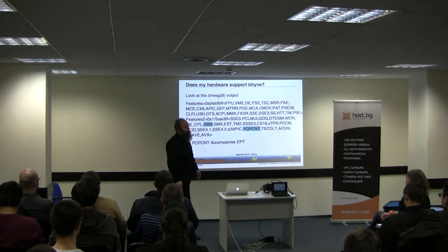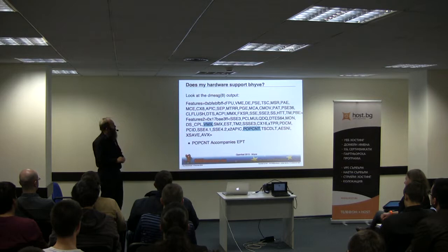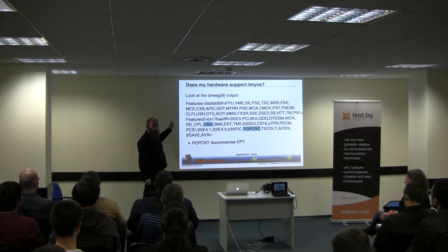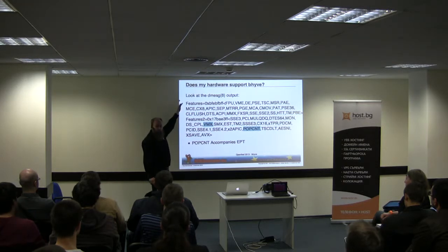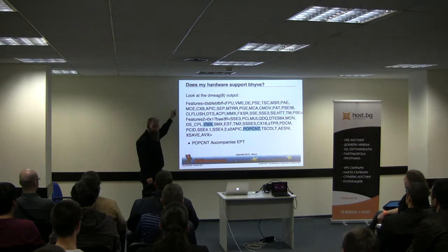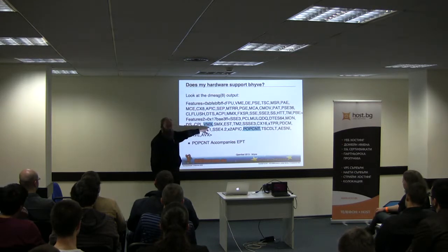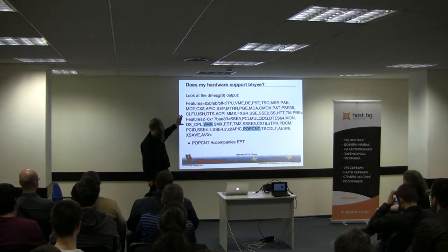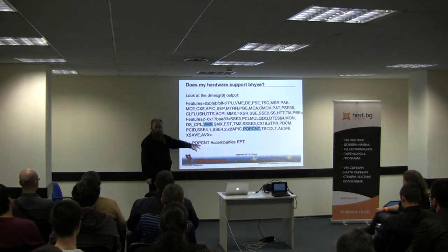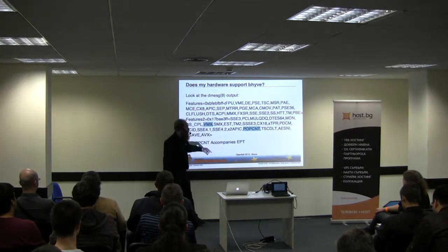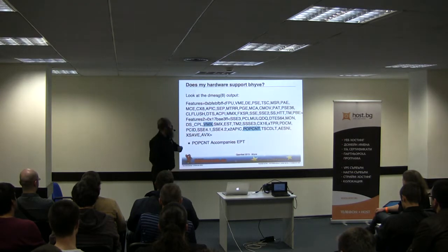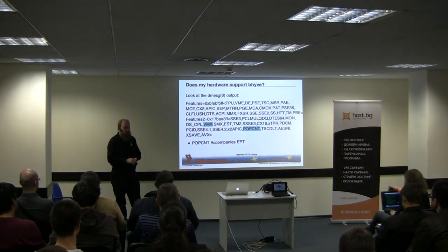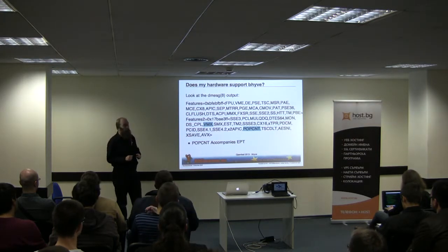If you want to know if your computer supports the needed features, here's what to look for. When your FreeBSD kernel starts up, after the processor type and speed, you'll see a list of processor features. Look for VMX — the virtual machine extensions. There's no direct EPT flag, but on Intel CPUs, if you have EPT you also have a feature called POPCNT, which is visible. If you have both VMX and POPCNT in your CPU, you can run bhyve. If you don't have those two, sorry — you cannot run bhyve.